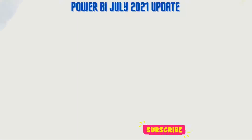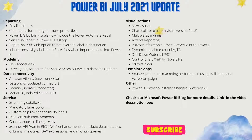Welcome to the July 2021 Power BI update. This month's update includes small multiples becoming generally available, as well as the model view and sensitivity labels in desktop. There is also a new preview for streaming dataflows.